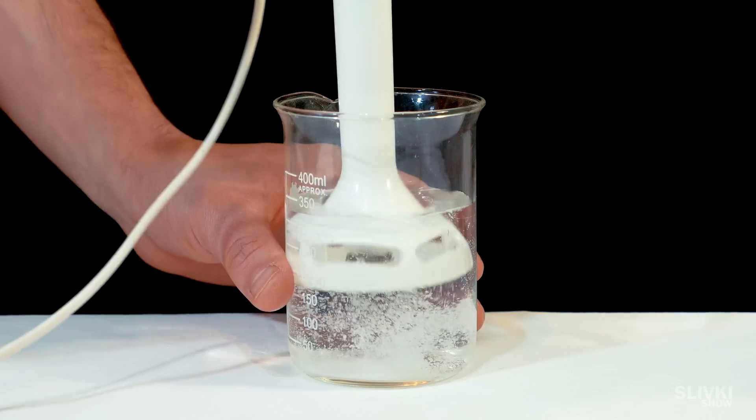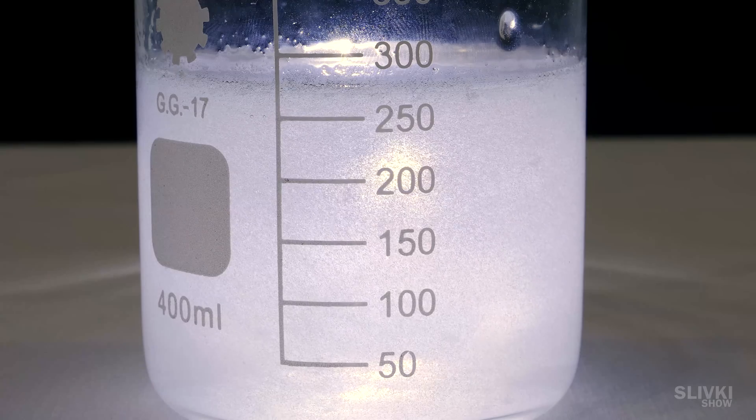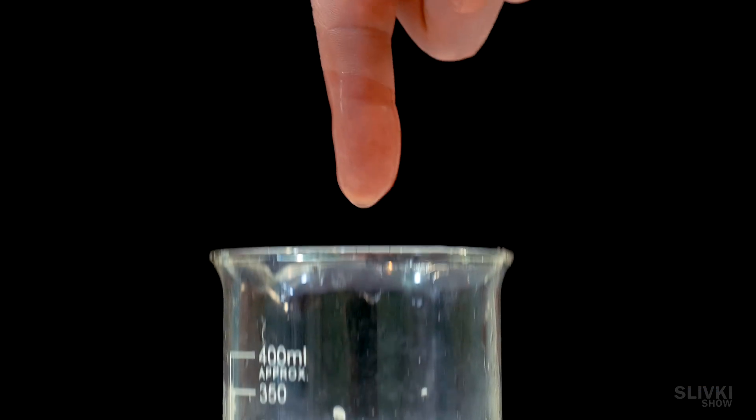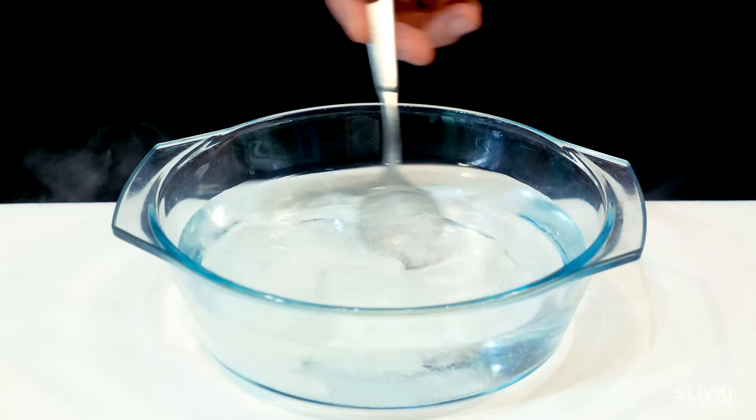Stir out the sodium alginate into water and mix well in a blender. Let the bubbles disappear and clear liquid remains. Next goes calcium lactate and mix it with ordinary spoon.